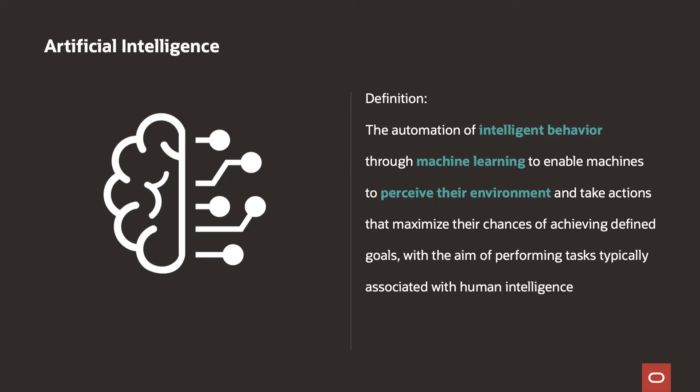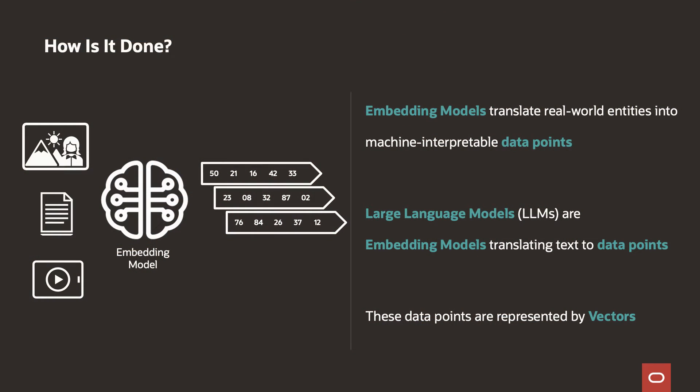Often what you hear these days is vectors and vector databases. How do we actually get to vectors? How do we generate vectors? You will keep hearing about embedding models. An embedding model is a type of machine learning model used to encode data as vectors. Using these embedding models, vectors can then be compared for similarity, and hence you can encode real-world entities such as an apple or banana and compare how far apart they are. The closer the distance, the more similar those real-world entities are.